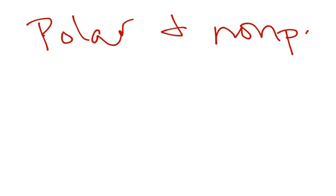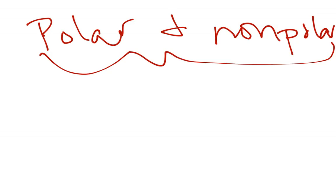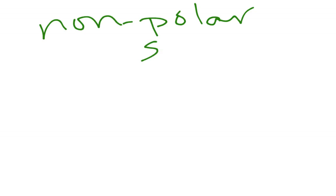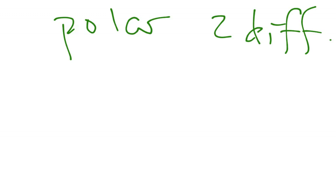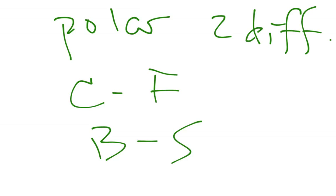A couple of quick notes: polar and non-polar are sometimes just grouped together under the term covalent — both of them are two non-metals. The difference being that non-polar is the same element, so boron-boron or sulfur-sulfur. Polar is two different ones, so carbon-fluorine or boron-sulfur. But both of those would be covalent.